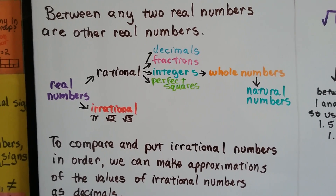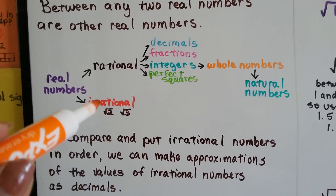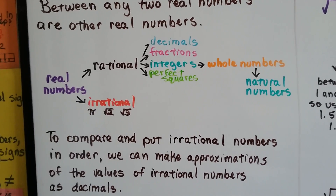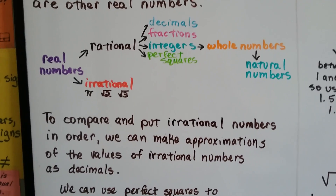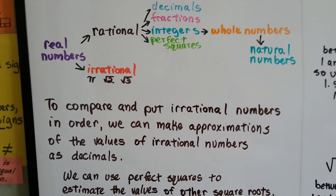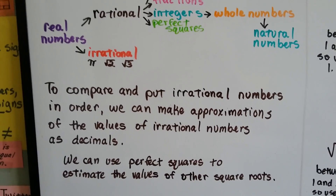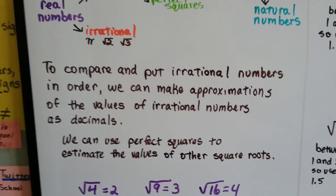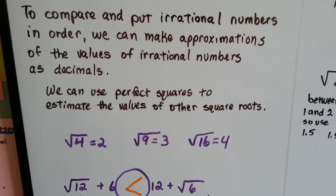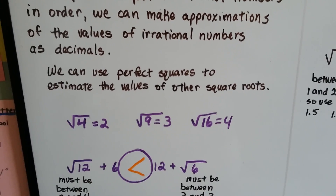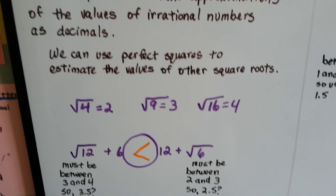If we want to compare and put irrational numbers in order, we can make approximations of their values as decimals. We can use perfect squares to estimate the values of other square roots.